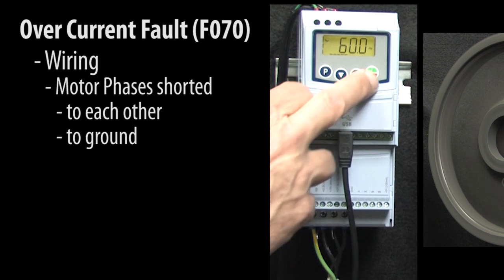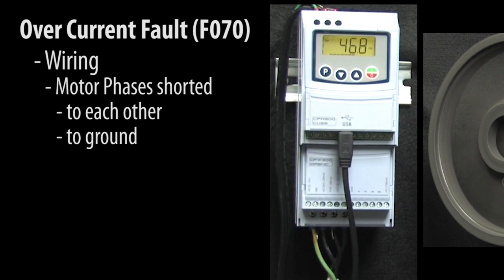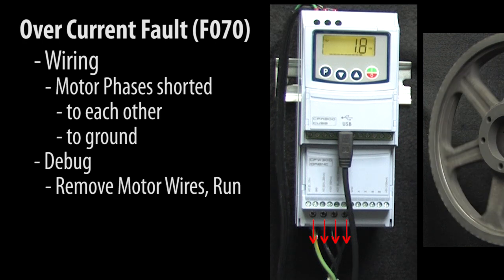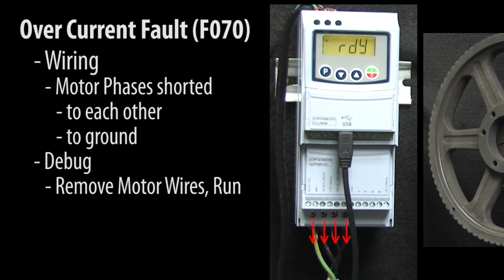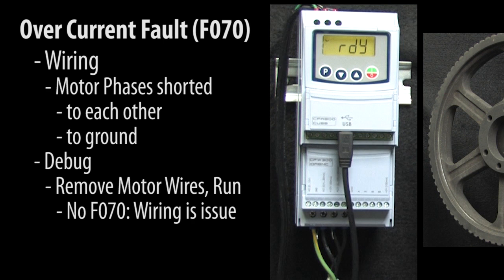So if you get an overcurrent fault, check your motor's wiring. The quickest way to do that is with the drive powered down, remove the motor's wiring from the drive and then hit run. If the drive runs without a fault, then there's definitely something wrong with the wiring to the motor or the motor has an internal short.